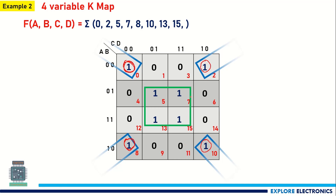For the green center group: horizontally C changes from 0 to 1 (neglect C), D is 1 throughout (keep D); vertically A changes from 0 to 1 (neglect A), B is 1 throughout (keep B). So this group gives B·D.